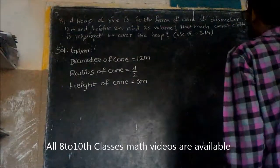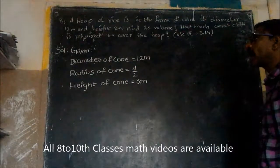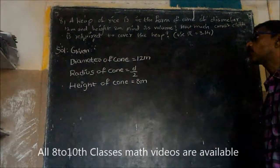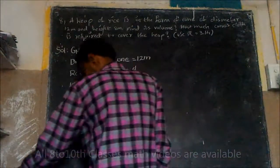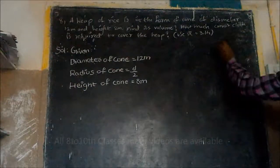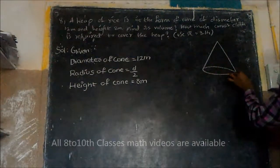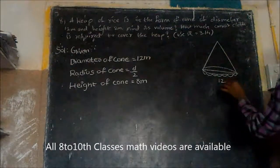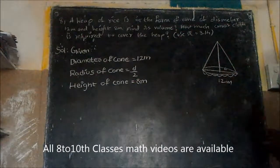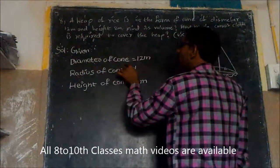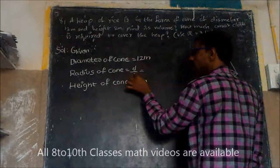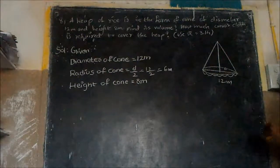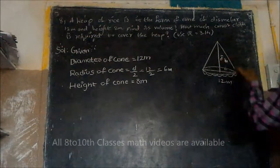A heap of rice in the form of a cone has a diameter of 12 meters and height of 8 meters. The radius is 6 meters, since radius equals diameter divided by 2, which is 12 divided by 2 equals 6 meters. Height is 8 meters.